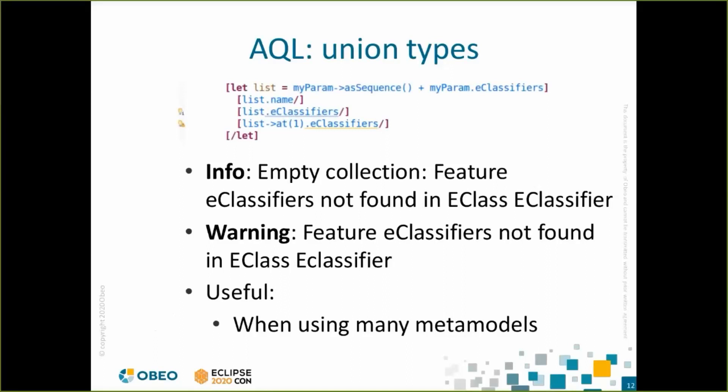AQL brings some interesting features. The first one is union types, which allows a variable to have one or many types. In the example, you can see a list of EPackages and EClassifiers. Since both have a feature name, you can write list.name without issue. But if you try to call EClassifiers, which exist only for EPackages, you will get a warning telling you that you might end up with an empty collection. Union types are useful when you have to deal with many metamodels.